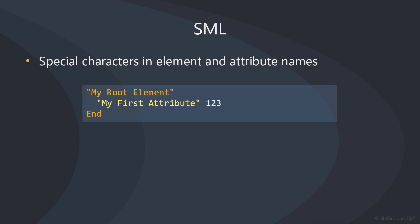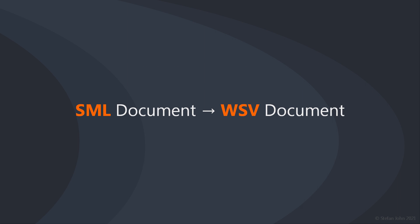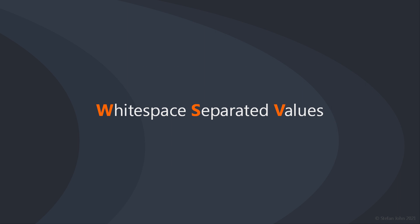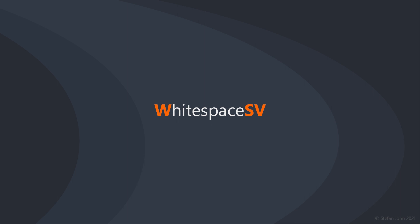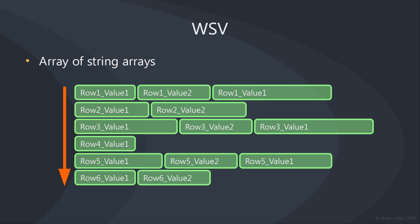By now you probably have already noticed the pattern behind SML lines. Every line is essentially just an array of string values separated by whitespace. Element lines only have one string value, and attribute lines at least two. That's because an SML document is in its essence a WSV document — a whitespace separated values document. WSV is essentially an array of string arrays where every line can contain as many values as desired. These values are separated by whitespace instead of commas as in CSV documents. All the string escaping and double quote enclosing rules I explained before for SML are actually WSV rules.